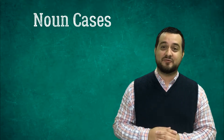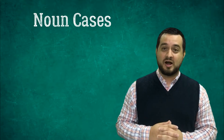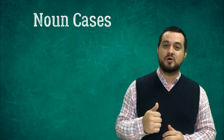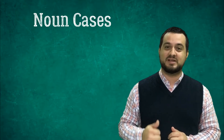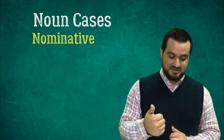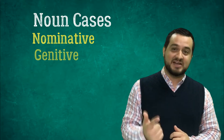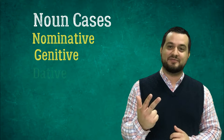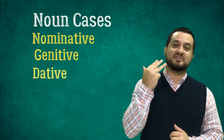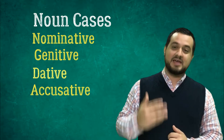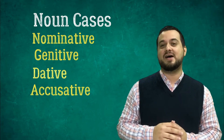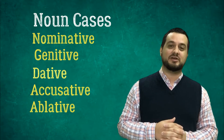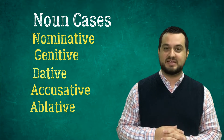So there are five different noun jobs and they are as follows. Go ahead and say them with me if you know what they are. The first one is nominative. The second is genitive. The third is dative. The fourth is accusative. And last we have ablative. Nominative, genitive, dative, accusative, and ablative.